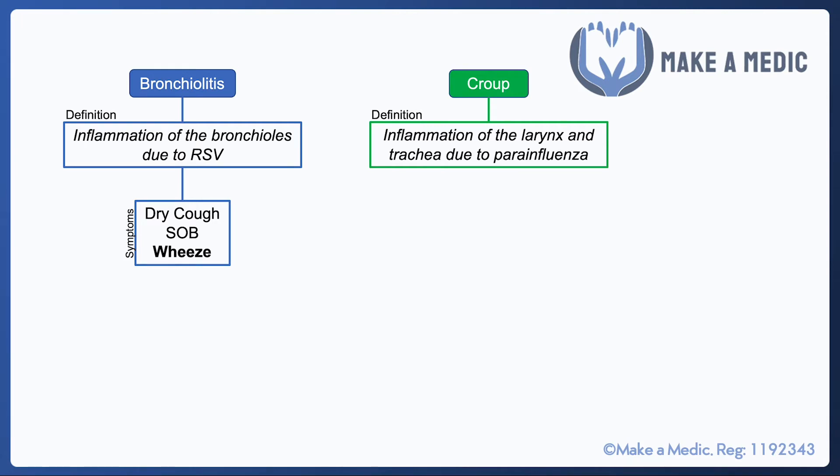Bronchiolitis presents with a dry cough, shortness of breath, and a wheeze. It's important to remember that children wheeze for a number of different reasons, and the main reason they are so predisposed to developing a wheeze is because their airways are already pretty small — so it only takes a small amount of inflammation to narrow these airways slightly to the point where it causes a whistling sound as air passes in and out.